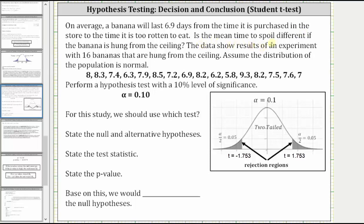The data shows results of an experiment with 16 bananas that are hung from the ceiling. Assume the distribution of the population is normal. So here we have the data, and we're asked to perform a hypothesis test with a 10% level of significance, which means alpha is equal to 0.10.